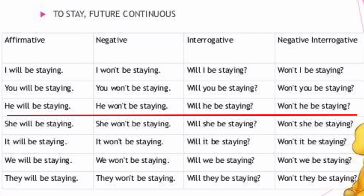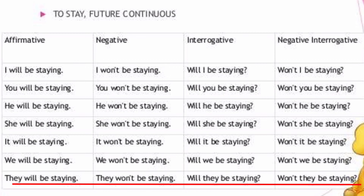Third example with 'he': He will be staying. He won't be staying. In the same manner we can continue. They will be staying. They won't be staying. Will they be staying? Won't they be staying?